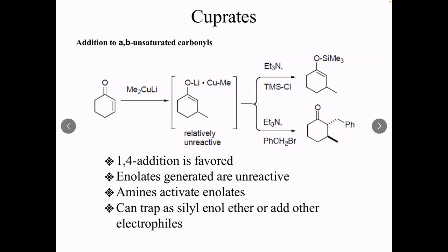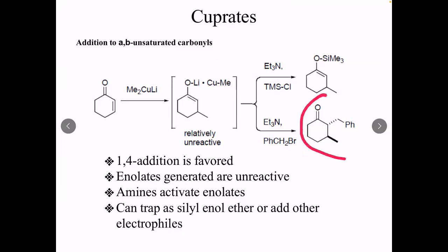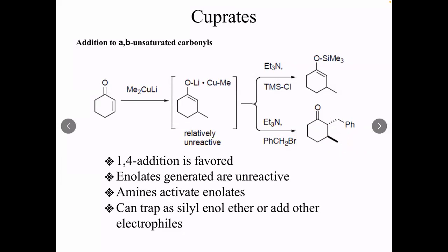The stereoselectivity shown here is really based on facial selectivity. When you do the 1,4-addition, you're going to have both products — this is not a single enantiomer, you'll get the other enantiomer as well, but that's just to show the selectivity. If the electrophile reacted with the enantiomer where the methyl group was on the wedge, it would come from the opposite face. And if it reacted with the other enantiomer where the methyl group is on the dash, the benzoyl bromide would come from the opposite face. It's just a simple steric argument.